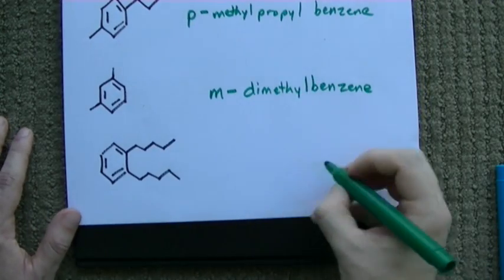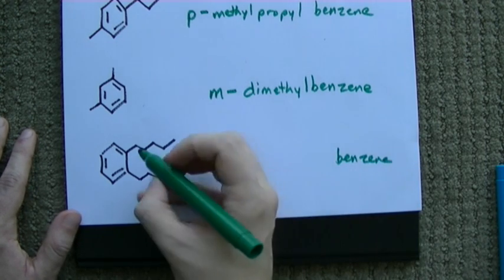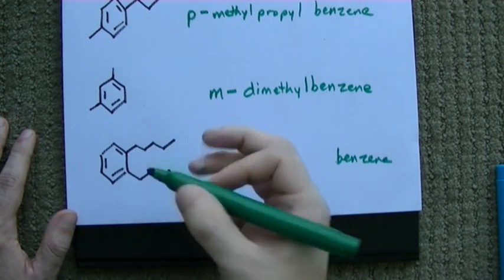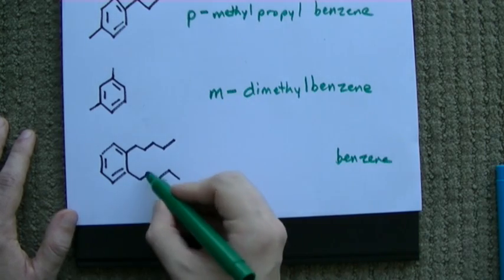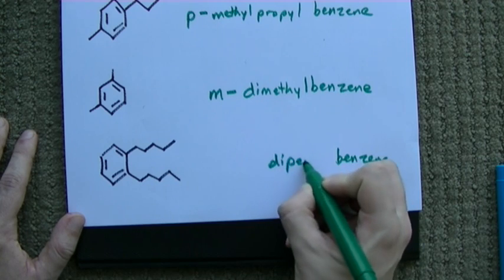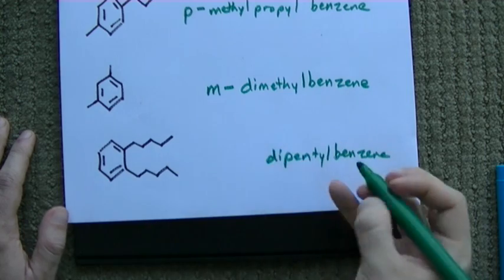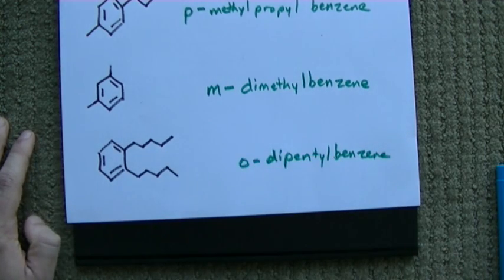Finally, you can probably guess where this is going. This is a benzene with 1, 2, 3, 4, 5-carbon substituents sticking out at two positions. That makes this dipentyl - 'pent' meaning five. They're right beside each other, which means ortho.